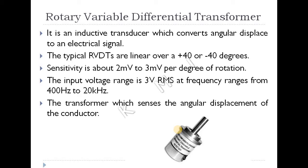The typical RVDT is linear over plus or minus 40 degrees. The LVDT range is 1.25 mm to 250 mm. The RVDT range is plus or minus 40 degrees. It is highly sensitive — 2 to 3 mV per degree — and the input voltage is 3V.